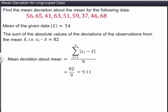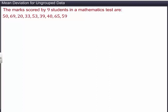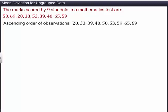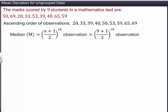Let's look at another example where we need to find the mean deviation about the median of a given data. First, we'll arrange the data in ascending order to obtain the median. The median of a given data is the middlemost observation, which is the fifth observation. Therefore, the median is 50.